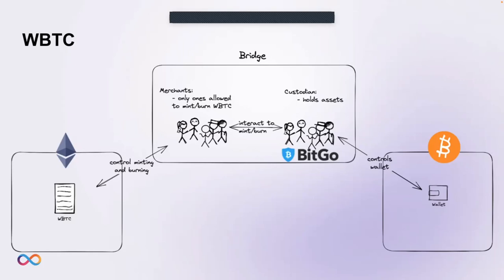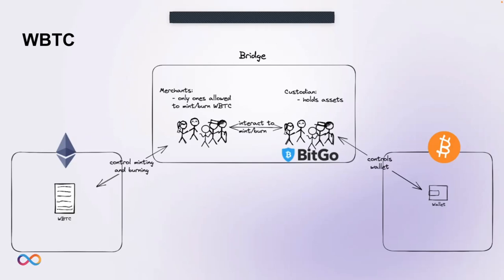To mint wrapped BTC and bridge BTC to Ethereum, a merchant has to send Bitcoin to the custodian, which then mints the same amount of wrapped BTC. If a user wants to bridge BTC to wrapped BTC, they have to go through KYC and AML with the merchant, send the BTC, and wait to receive back the wrapped BTC. Going the other way requires the same process in reverse. As stated in the wrapped BTC white paper, you have to trust the custodian not to run away with your funds, not to get hacked, and to honor the one-to-one backing.